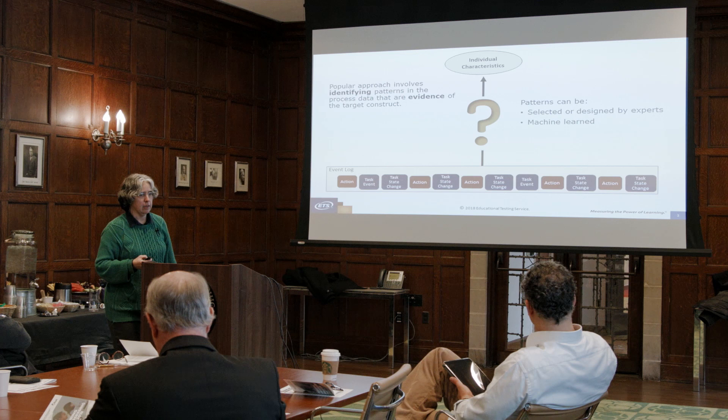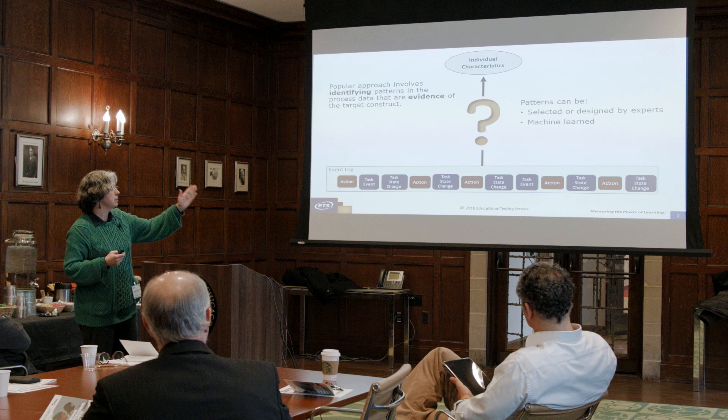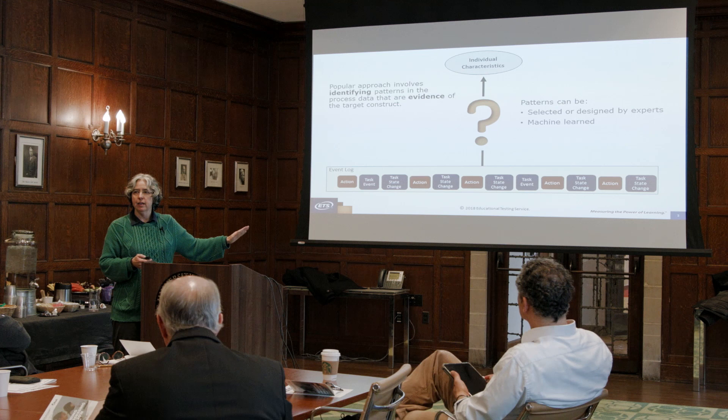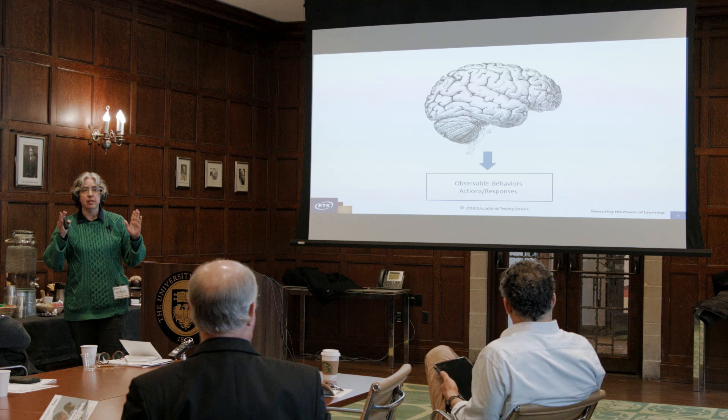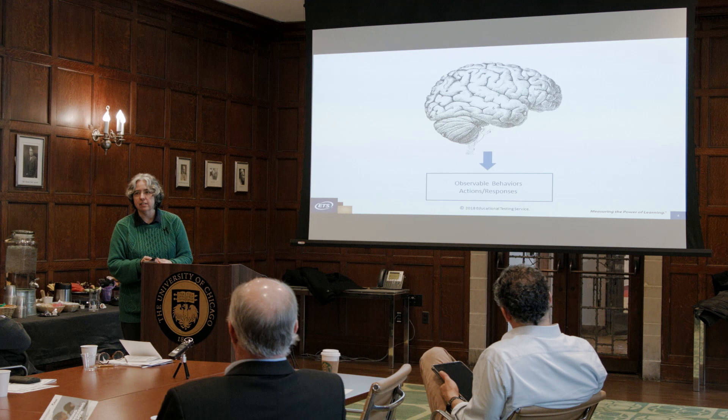A very popular approach right now involves identifying patterns in the process data that are evidence of target constructs. These can be selected — preferably designed by experts — or they can also be machine learned. That's not what I'm going to talk about today. Instead, I start with the question of what's going on in a person's brain when they take particular actions, like behaviors that we can observe.